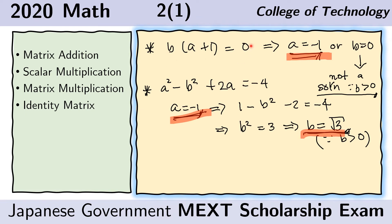Clearly from this simpler equation, we have possible values of a and b. That is, b could be 0, or a could be negative 1, because negative 1 plus 1 is 0. Those are our possible values. However, the problem states that b must be a positive number, so we do not consider b equals 0. We consider a equals negative 1, and so this is our value of a.